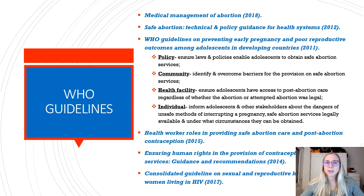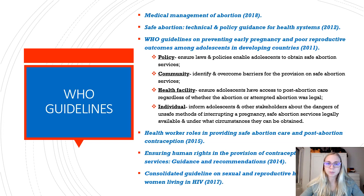At the health facility level, it recommends ensuring that adolescents have access to post-abortion care regardless of whether the abortion or attempted abortion was legal. At the individual level, it recommends informing adolescents and other stakeholders about the dangers of unsafe methods of interrupting a pregnancy, the safe abortion services that are legally available, and under what circumstances they can be obtained. Other relevant guidance includes health worker roles in providing safe abortion care and post-abortion contraception, a document on ensuring human rights in the provision of contraceptive information and services, and the consolidated guideline on sexual and reproductive health and rights for women living with HIV.